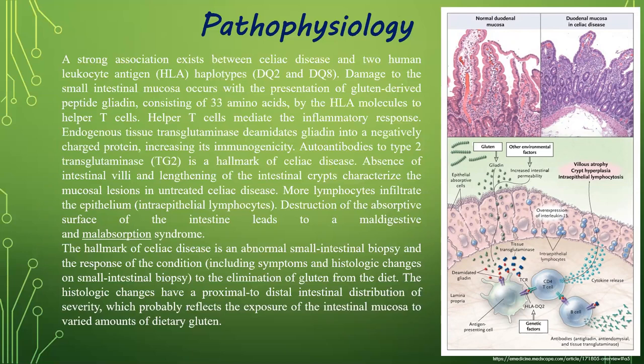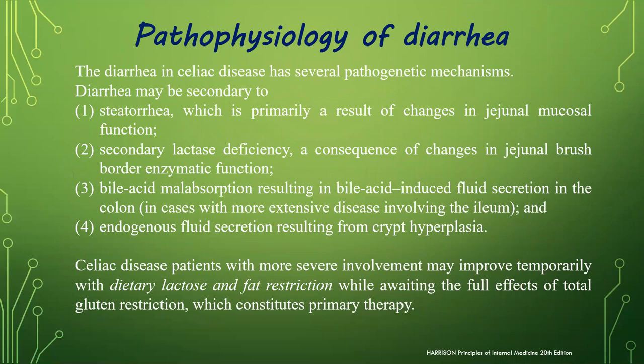Absence of intestinal villi and lengthening of the intestinal crypts characterize the mucosal lesions. In untreated celiac disease, more lymphocytes infiltrate the epithelium. Destruction of the absorptive surface of the intestine leads to a maldigestive and malabsorption syndrome. The hallmark of celiac disease is an abnormal small intestine biopsy and the response of the condition to elimination of gluten from the diet. The histologic changes have a proximal-to-distal intestinal distribution of severity.